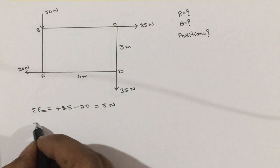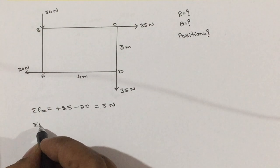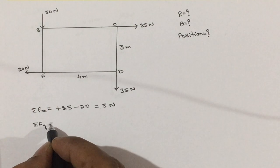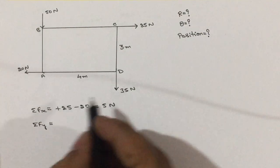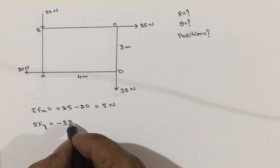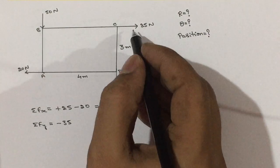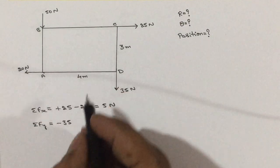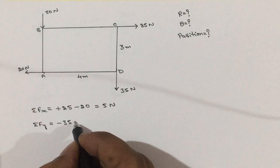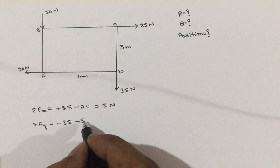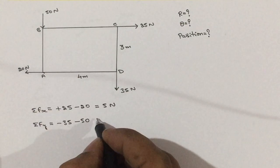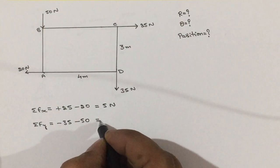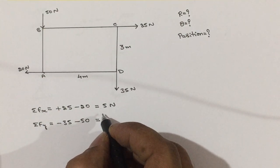Then calculate sigma Fy. That is equal to the first force, which is vertically downward, so minus 35. The next is horizontal — leave it. Then vertical, so minus 50. Then horizontal — leave it. So sigma Fy equals minus 85 Newton.